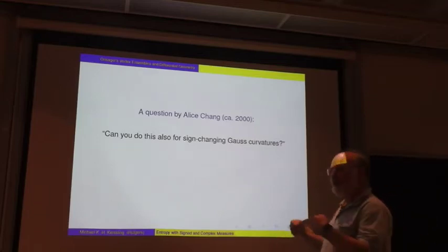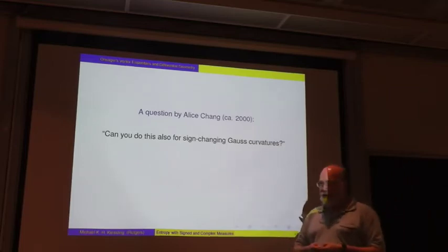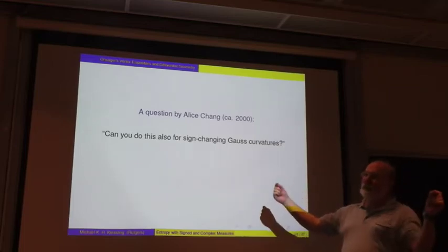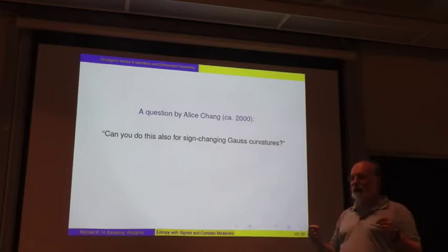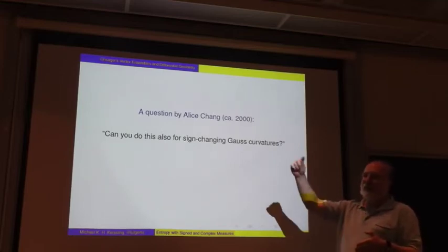So what I did is I reduced the dimension from positions in two dimensions to positions in one dimension. Instead of the logarithmic interaction, I took a quadratic interaction. And in addition, this k, of course, had to become now sign-changing. It was now the product of a quadratic times a Gaussian.